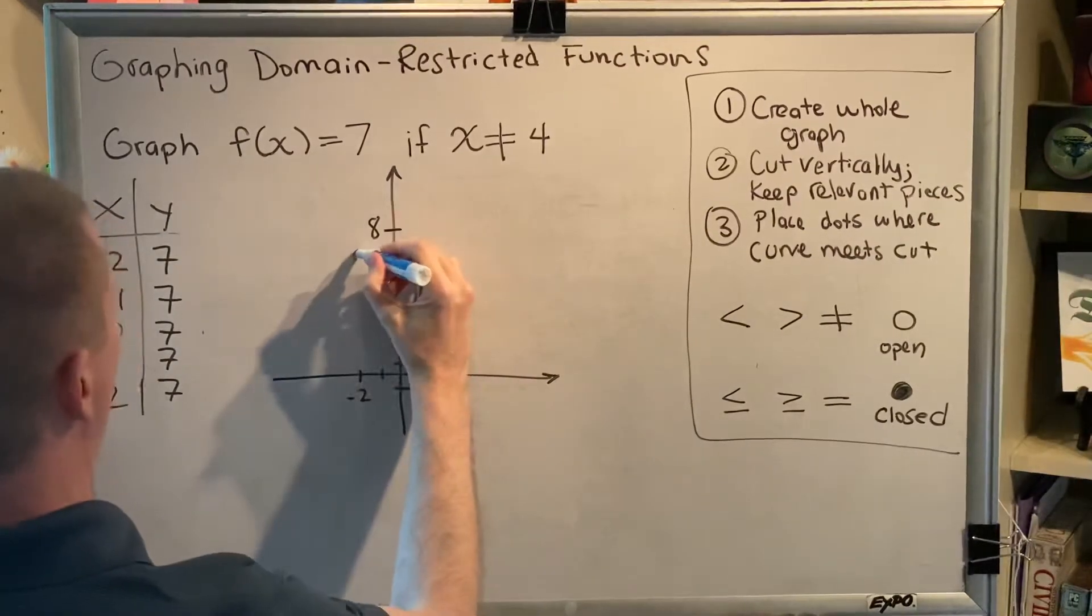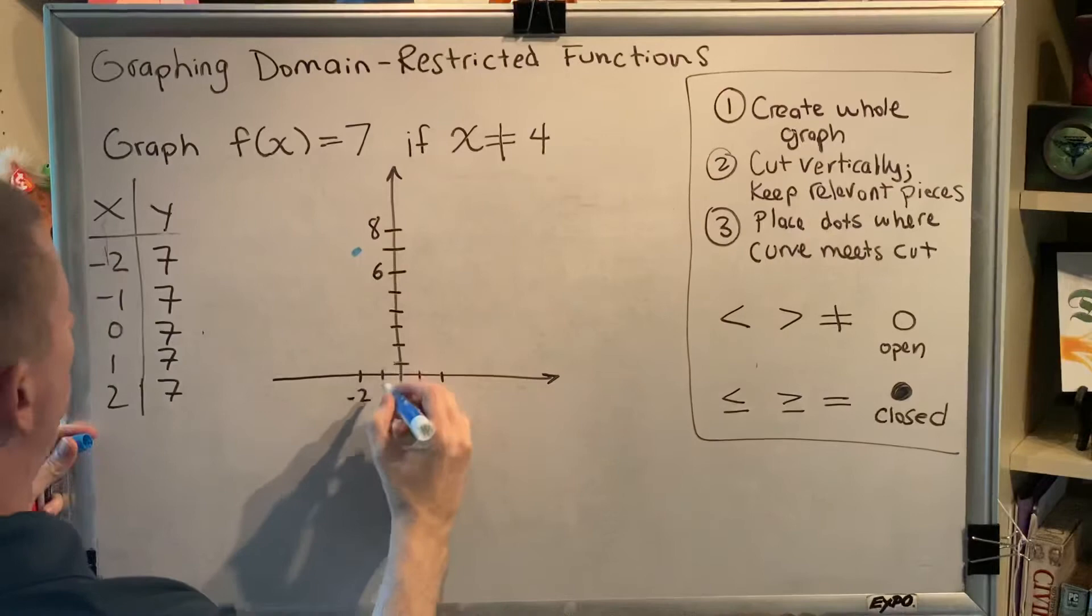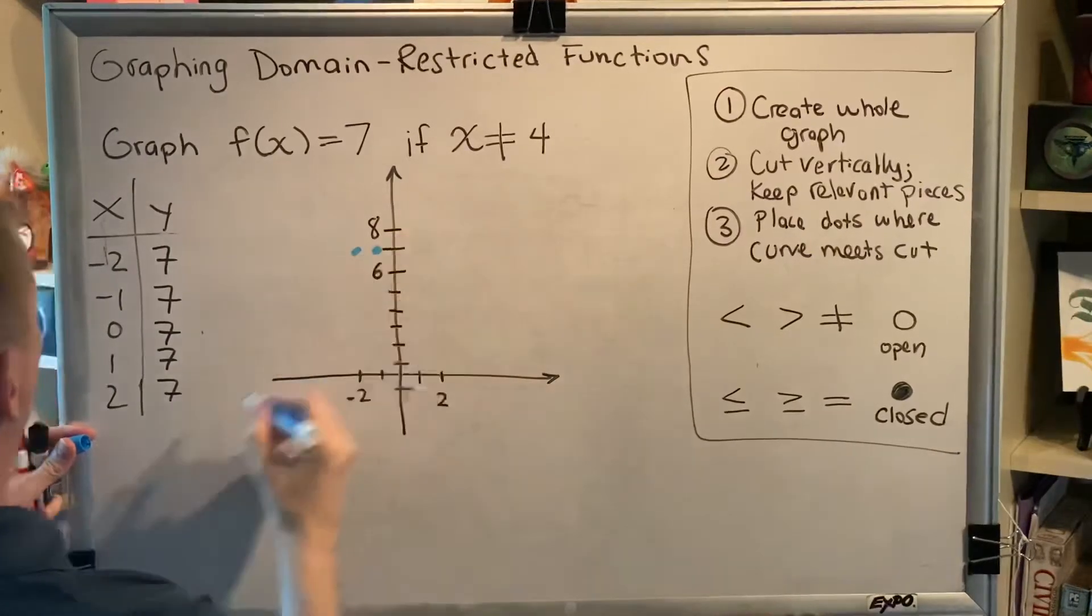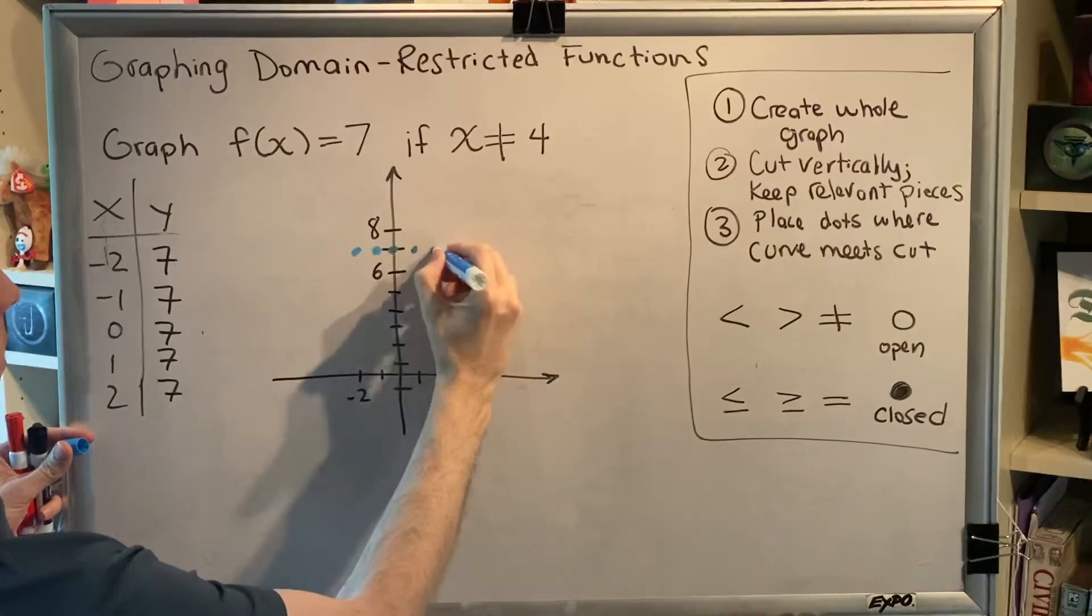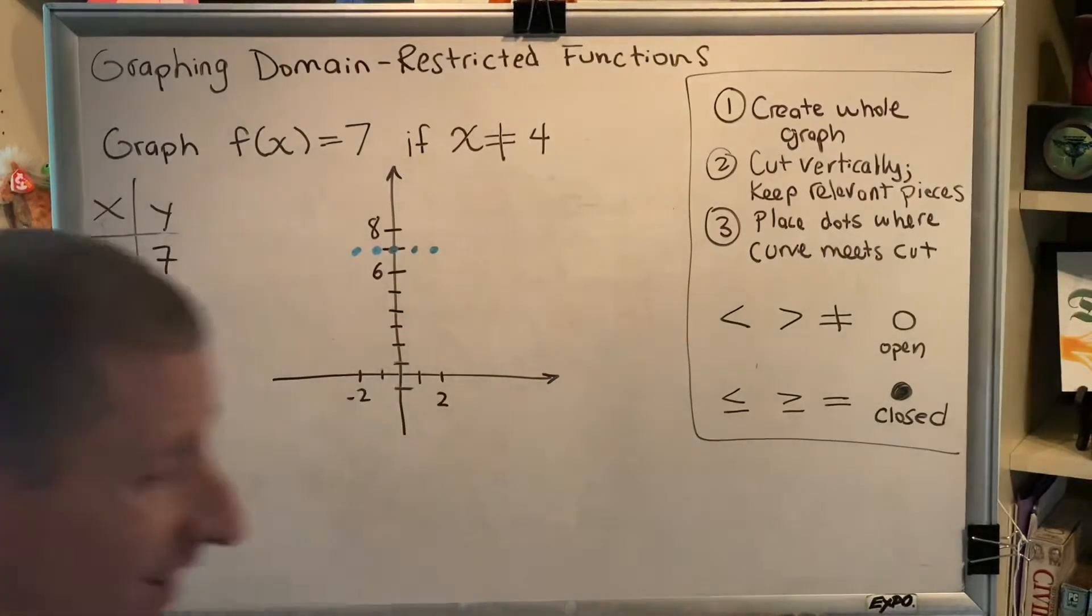Negative 2, 7. That would be here. Negative 1, 7 would be here. 0, 7. 1, 7. 2, 7. The constant function is a straight line.